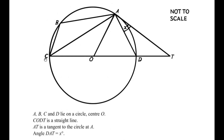Points A, B, C, D lie on a circle with center O. C, O, D, T is a straight line. A, T is a tangent to the circle at point A and angle D, A, T is given as x degrees.